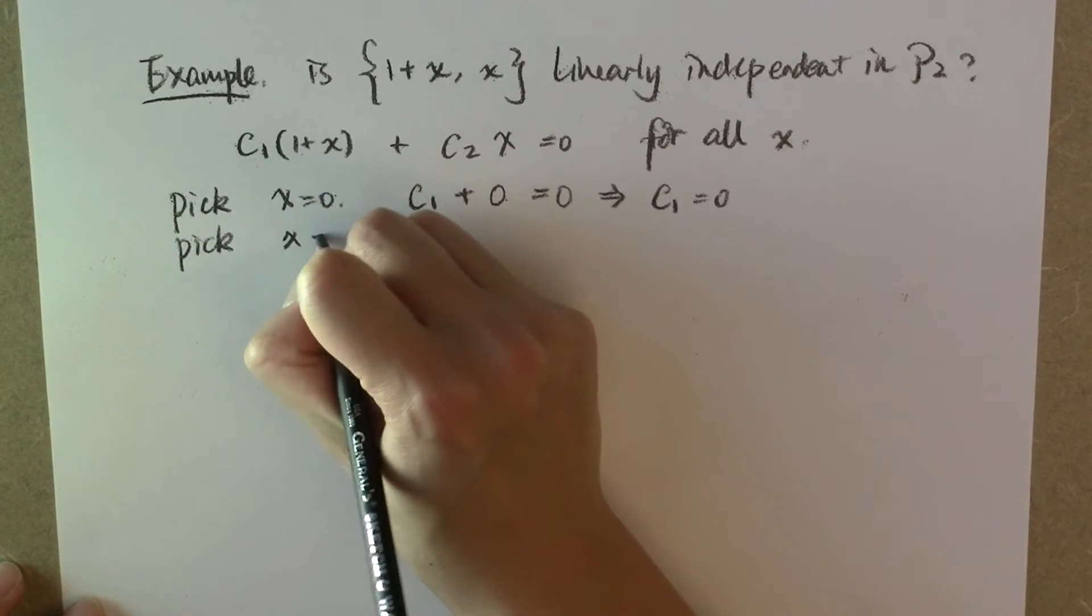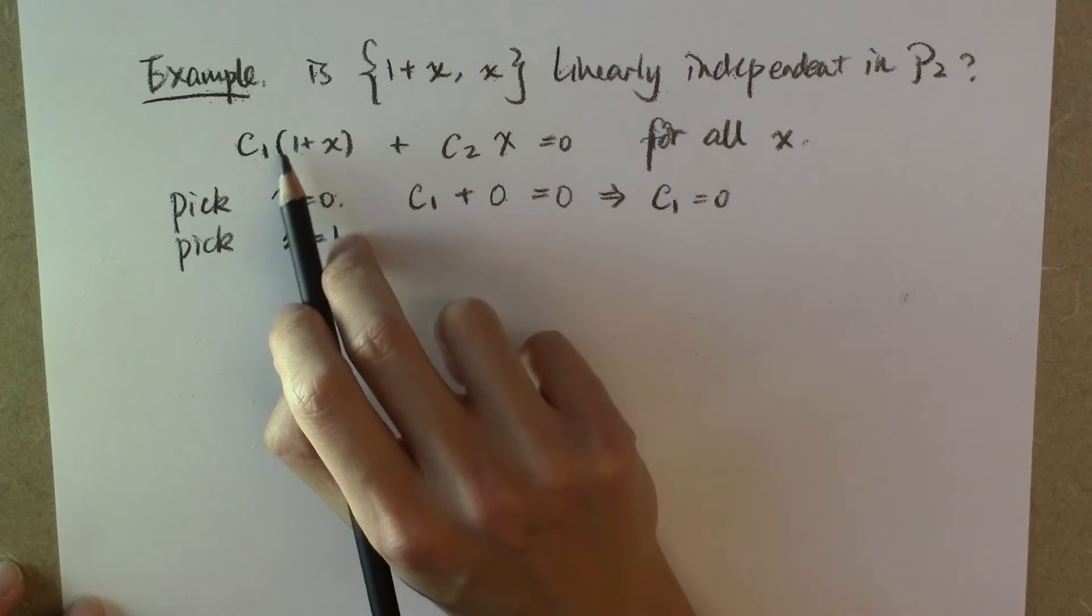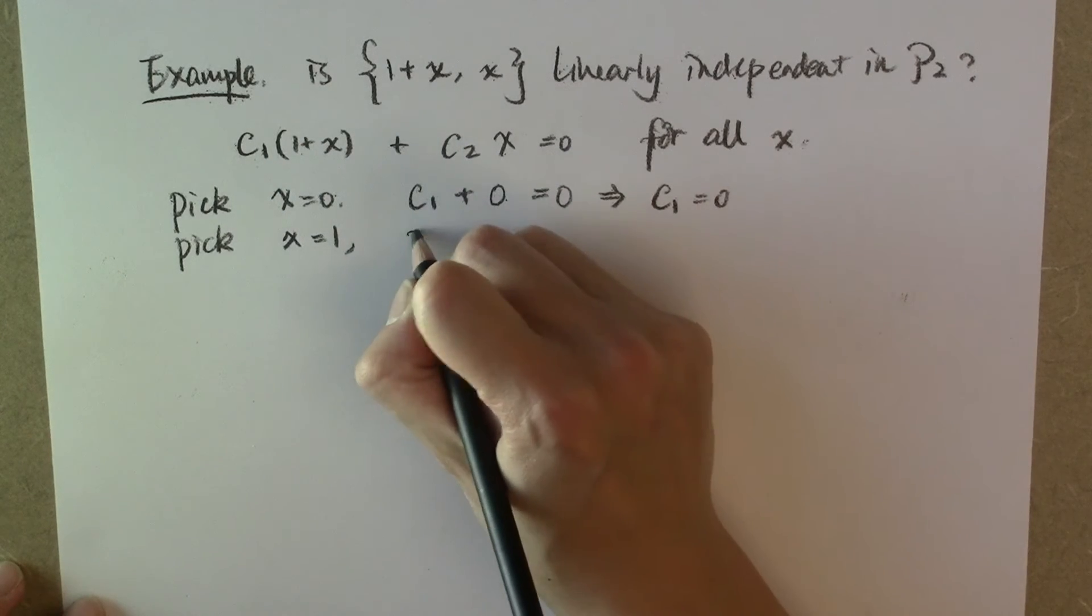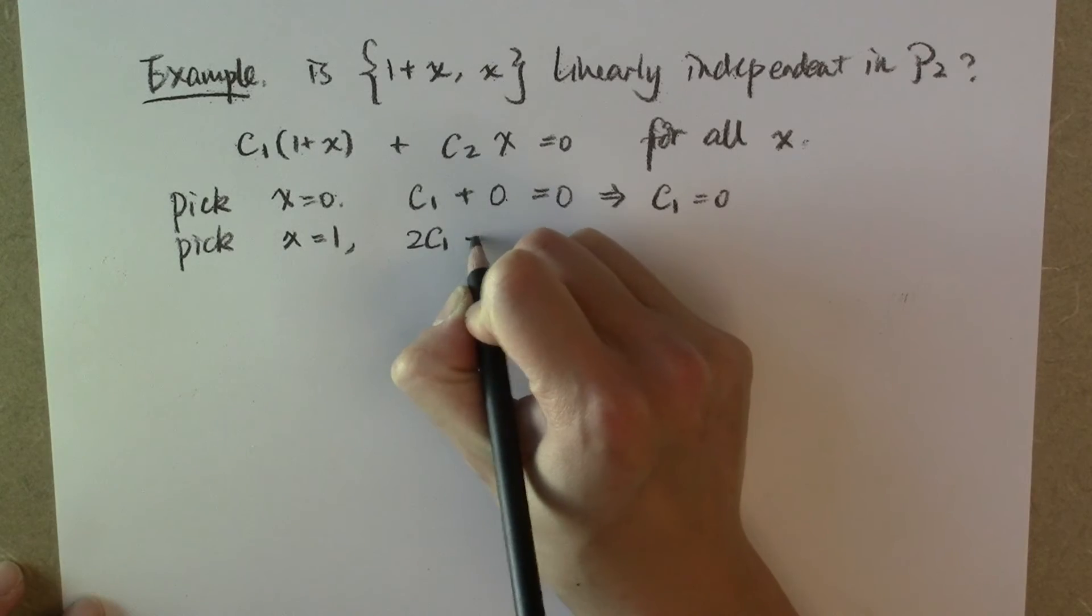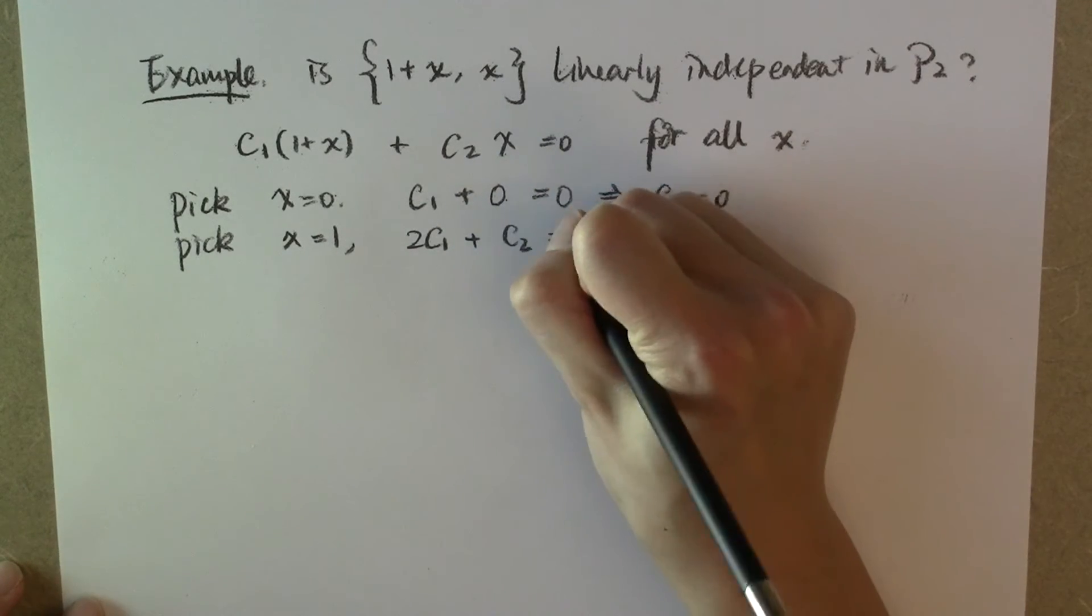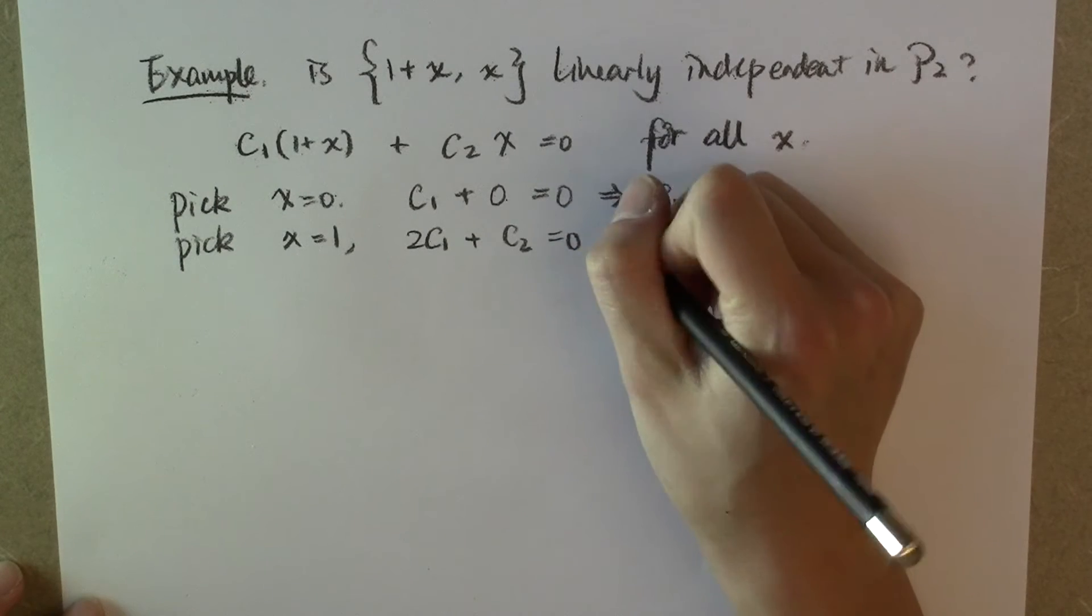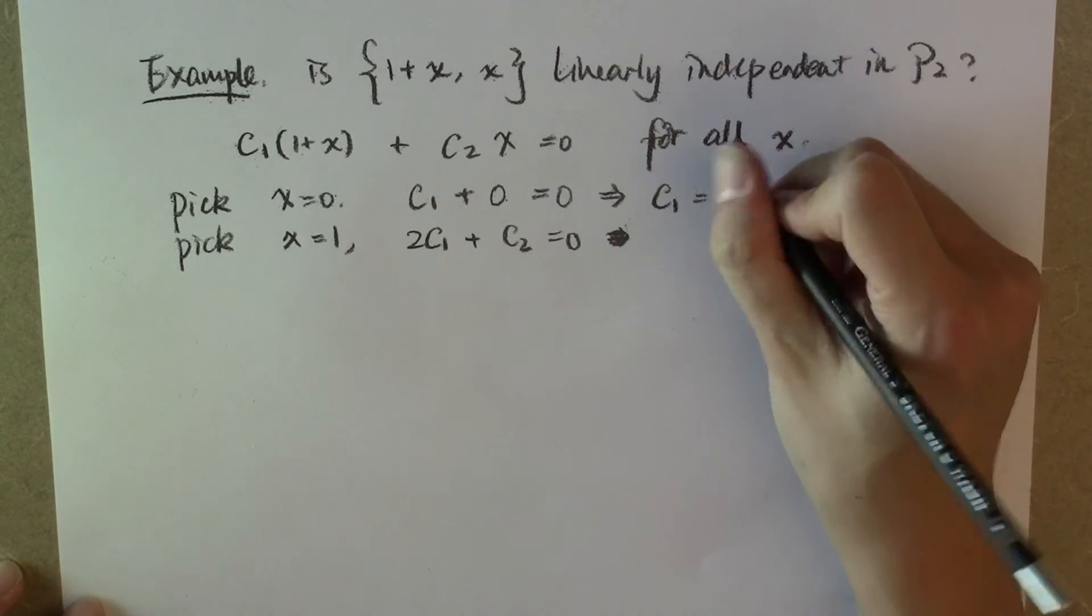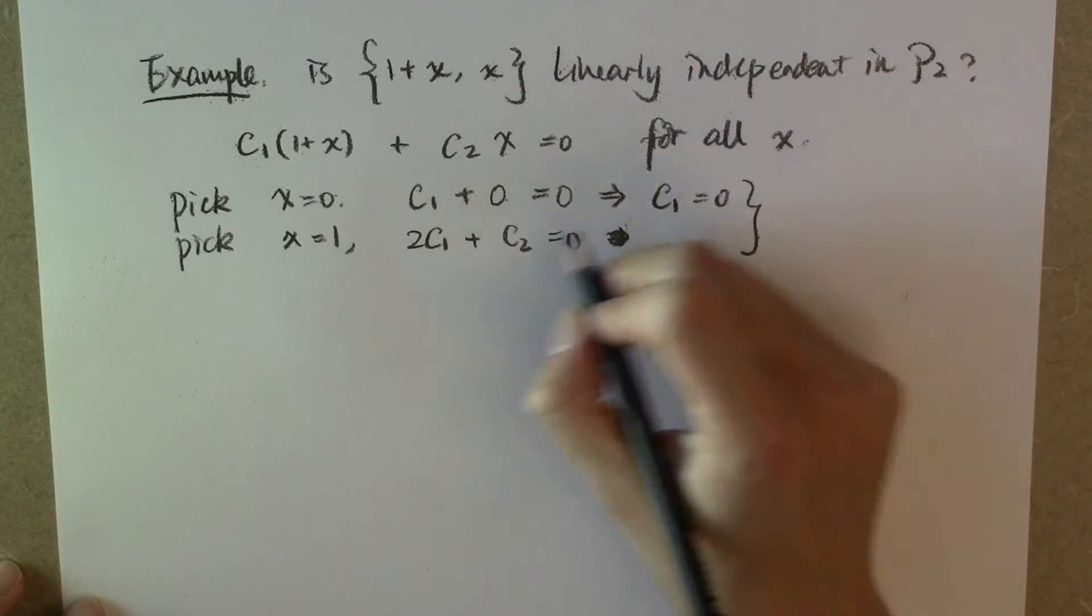Pick x equal to 1, for example. Then c sub 1 multiplying 1 plus 1, so 2 times c sub 1, plus c sub 2 multiplying 1, so c sub 2. That must be zero. And because c sub 1 is already zero...